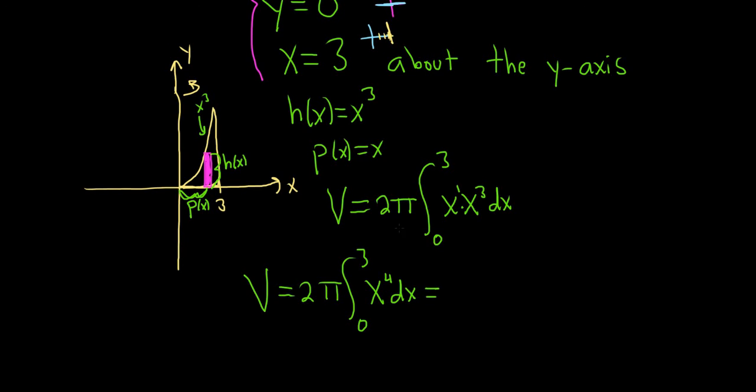Now we're finally in a position to integrate. We'll use the power rule. So this will be 2 pi. Add 1 to the 4. That'll give us x to the 5 over 5. And then we're going from 0 to 3.